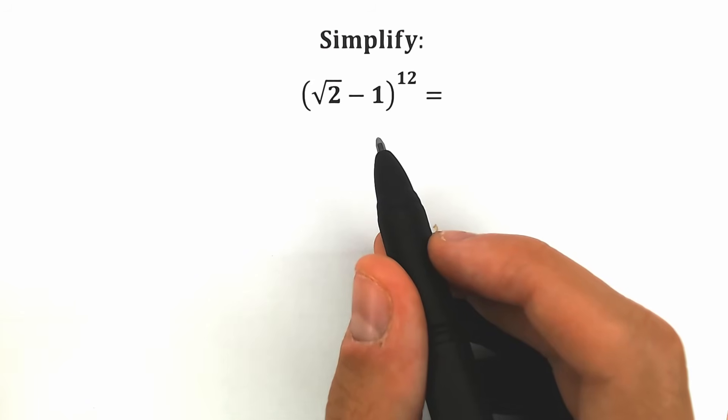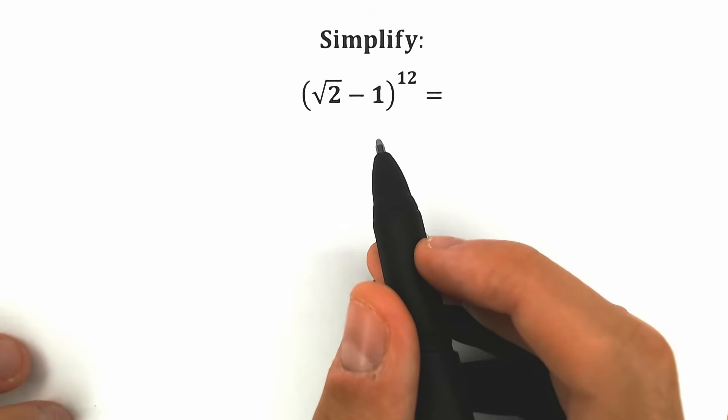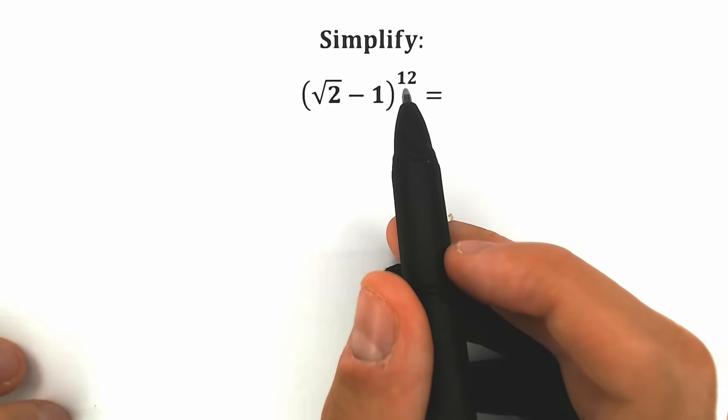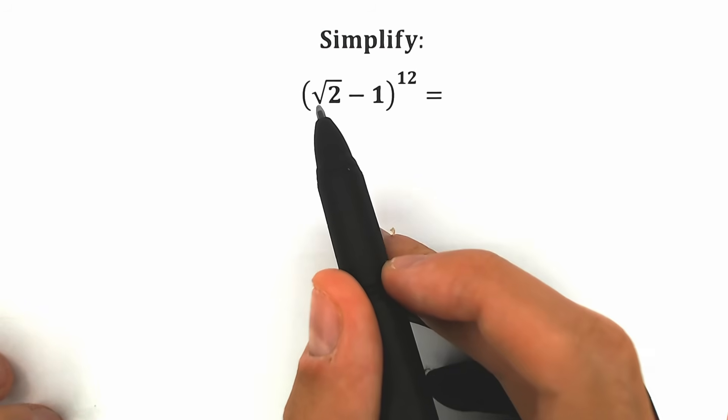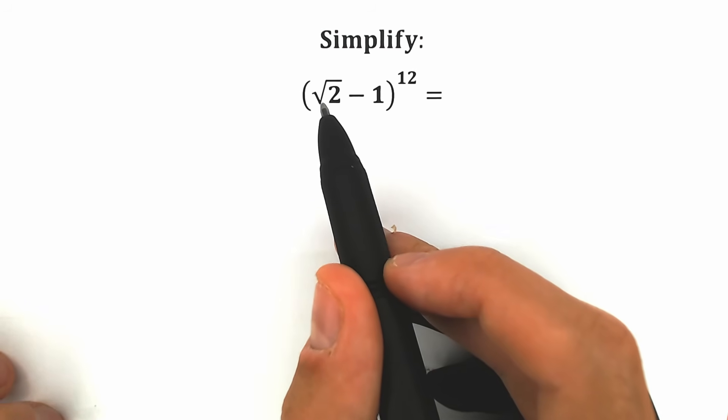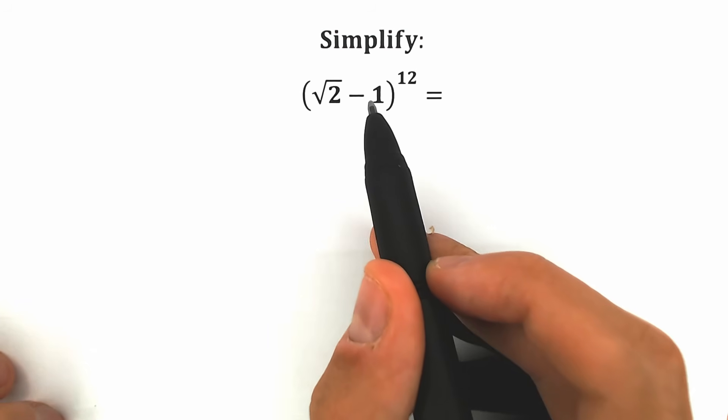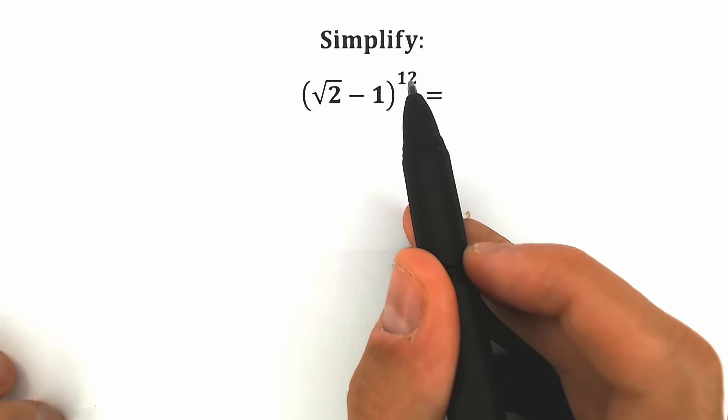Hello my friend, happy to see you here. Welcome back to my channel Higher Mathematics. Today we have a really interesting question — we need to evaluate this expression: we have square root of 2 minus 1, to the 12th power.